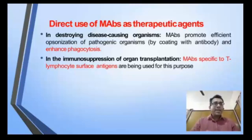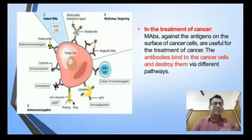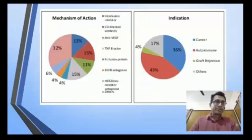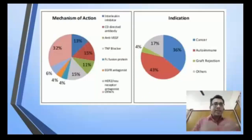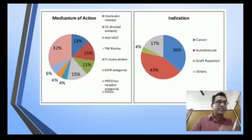Most importantly, monoclonal antibodies can be used therapeutically. For infections, they can bind specifically to pathogens and help with opsonization and phagocytosis. For immunosuppression, antibodies against specific cytokines can be used. Against cancer, antibodies targeting proteins specifically expressed on cancer cells cause those cells to be destroyed by white blood cells. Currently, around 43% of monoclonal antibody drugs are used against autoimmune diseases and 36% against cancer.